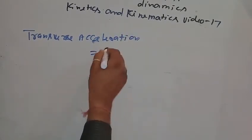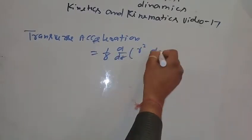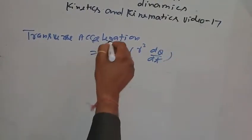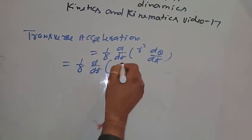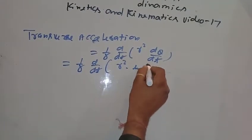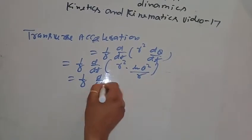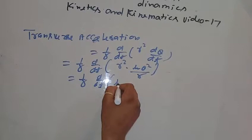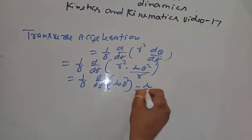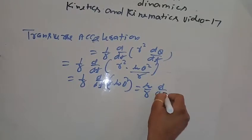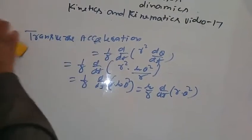Transverse acceleration equals 1 upon r times d/dt of r squared d theta/dt. Substituting r squared times mu theta squared by r, the r cancels, giving mu by r times d/dt of r theta squared.